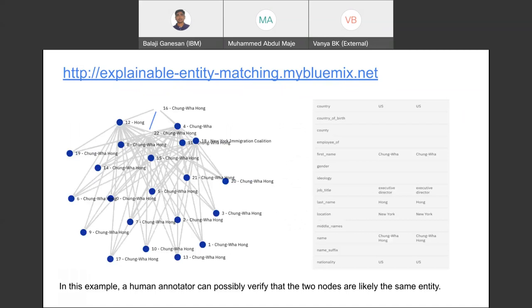So this is our demo where a human annotator can possibly verify that the two nodes are likely the same entity. And our reasoner would verify if the explanations given by the GNN explainer are correct or not, much like the human annotator. So this can be done in an automated way.